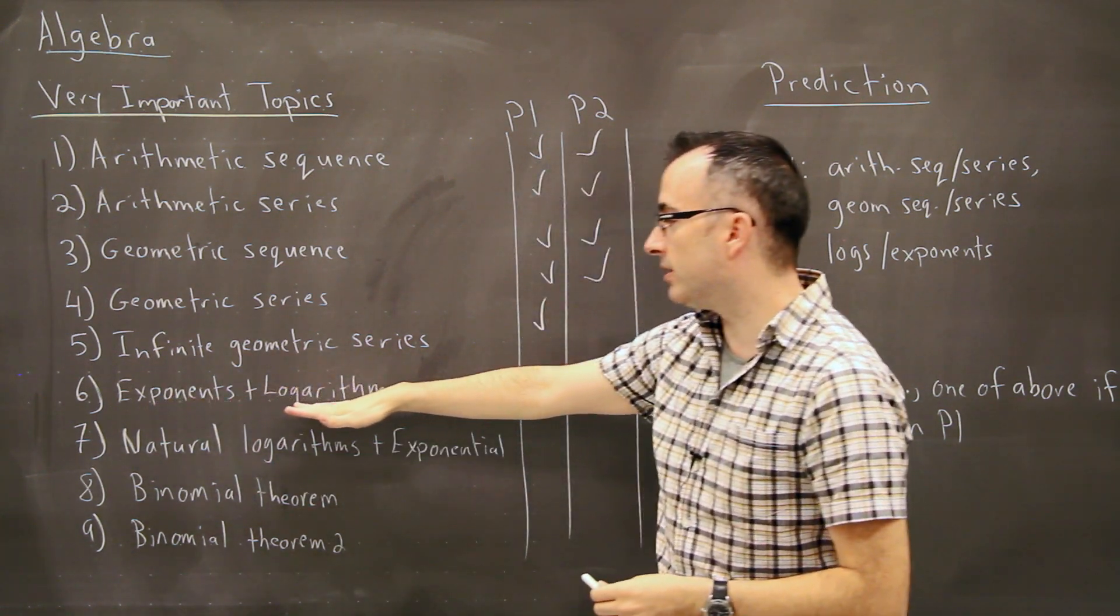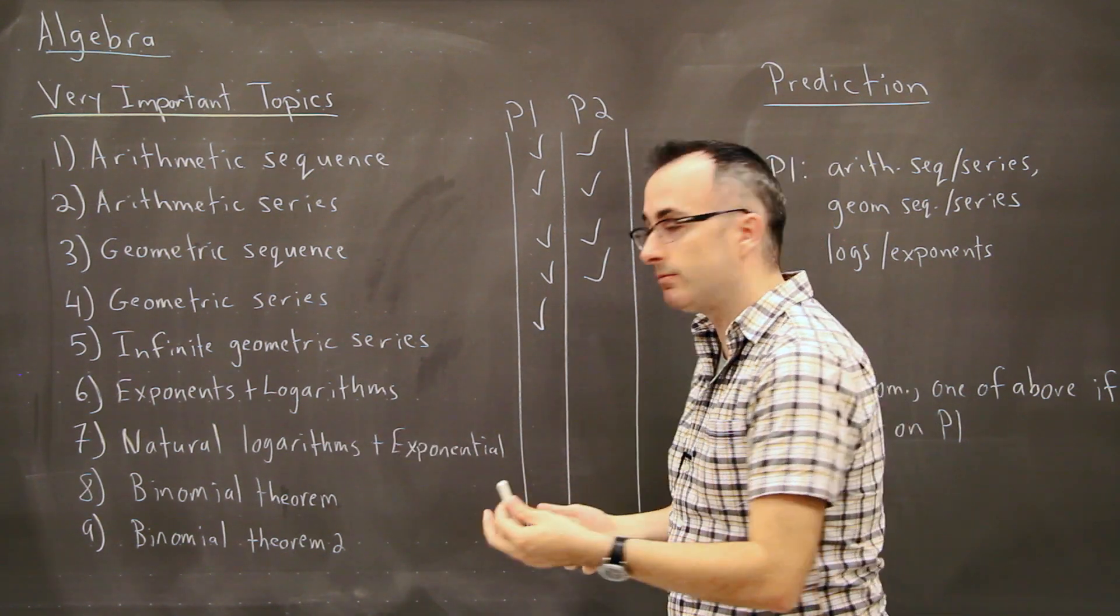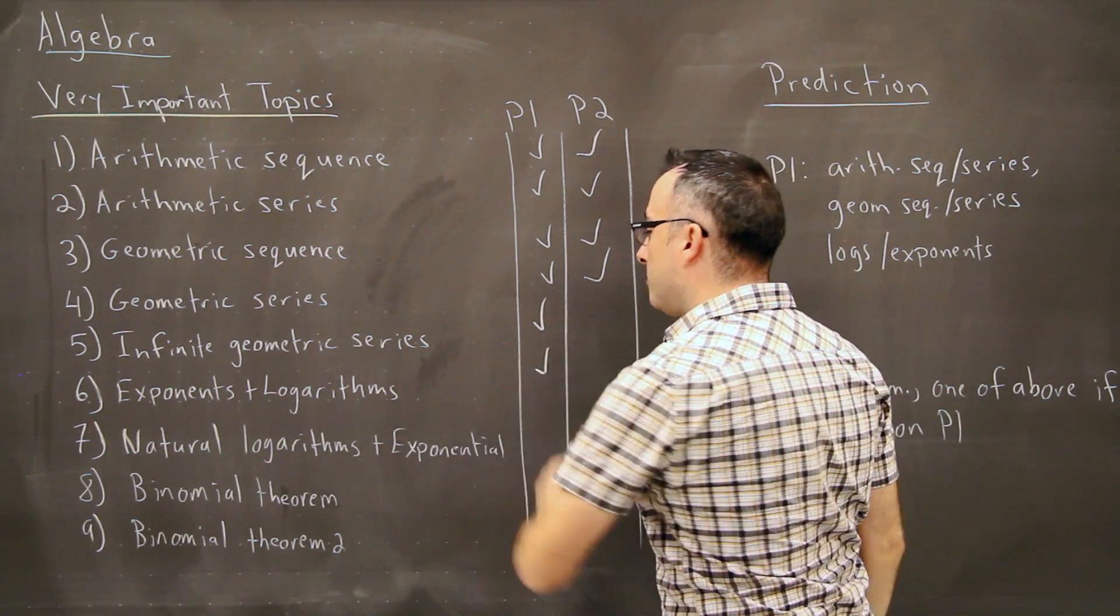Then we have Exponents and Logarithms. These are very generic things. These are very generic rules about how we use exponents, how logarithms work, and those are also mainly on Paper 1.